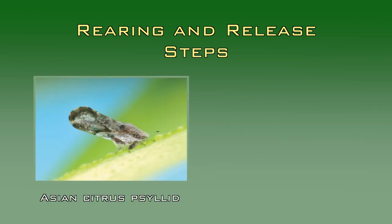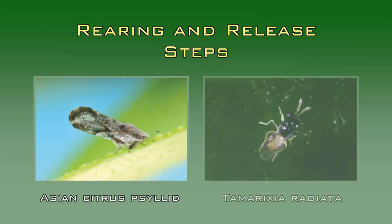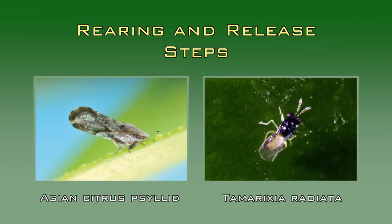Here is a brief, step-by-step account of how the rearing and release takes place. During this process, both the pest, the Asian citrus psyllid, and the beneficial parasitoid Tamarixia are being produced.